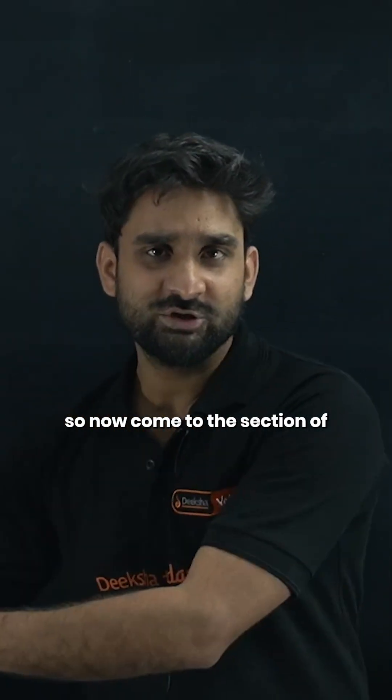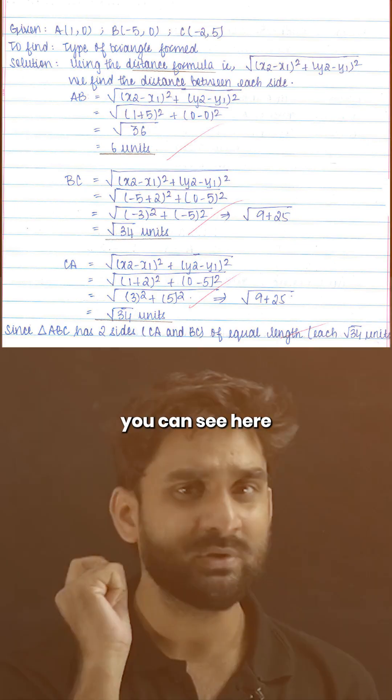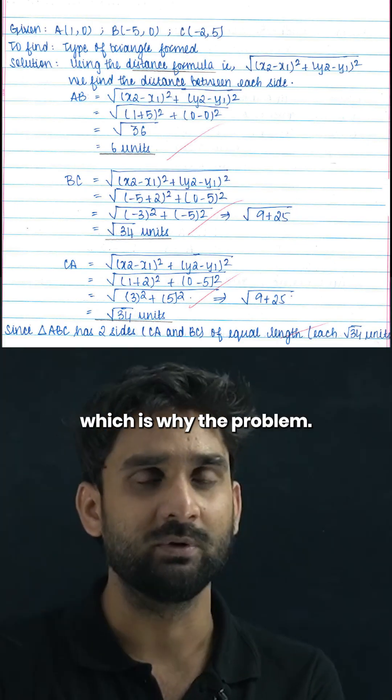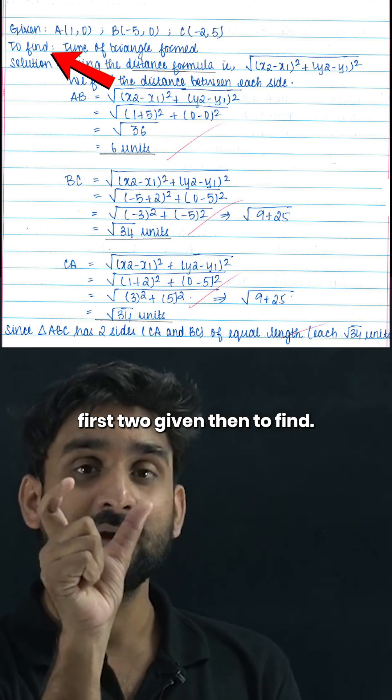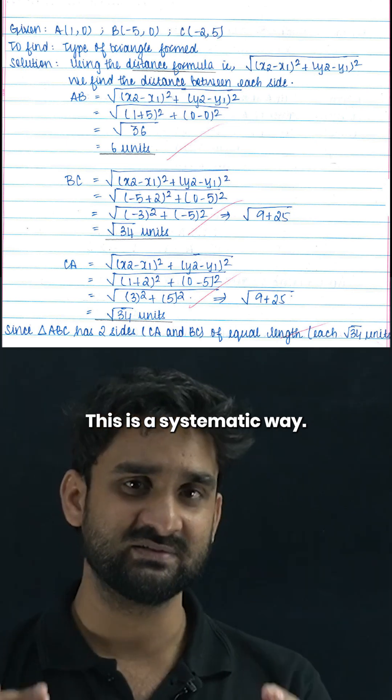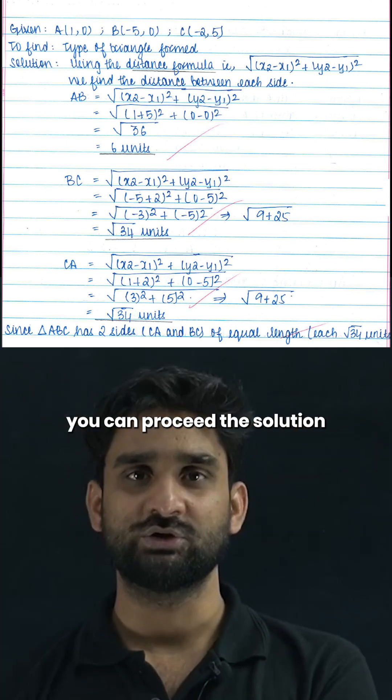Now come to section number B, C and D. Point number two, you can see here in every problem because you know B, C, D section contains subjective type questions which is word problem. So in every problem, the student has written first to given, then to find, then the solution is being proceeding. So this is the hierarchical way, this is the systematic way by using that you can proceed the solution.